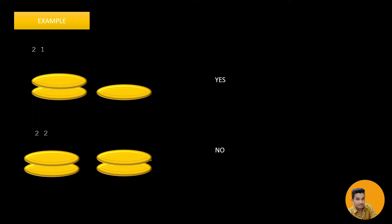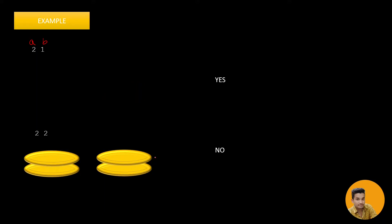In the first example, A is 2 and B is 1, meaning the left pile contains 2 coins and the right pile contains 1 coin. I start by removing two coins from the left pile, so I've removed two coins, and then I remove one coin from the right pile — emptied. That's why we print yes.